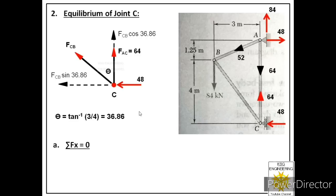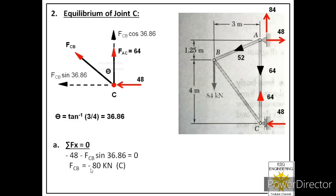Applying ΣFx = 0 for joint C: both 48 kN and FCB sin 36.86° act towards the left (negative): −48 − FCB sin 36.86° = 0, giving FCB as a negative value. We assumed tensile force but got a negative value, meaning FCB is actually compressive. So force in member CB is compressive. We have now found forces in all three members, completing the method of joints.